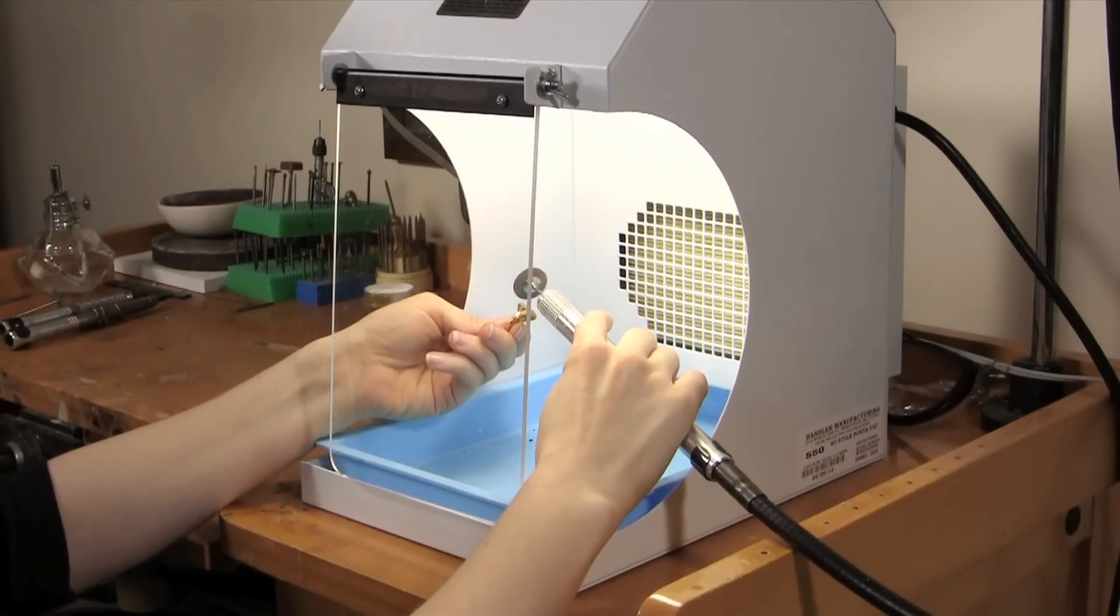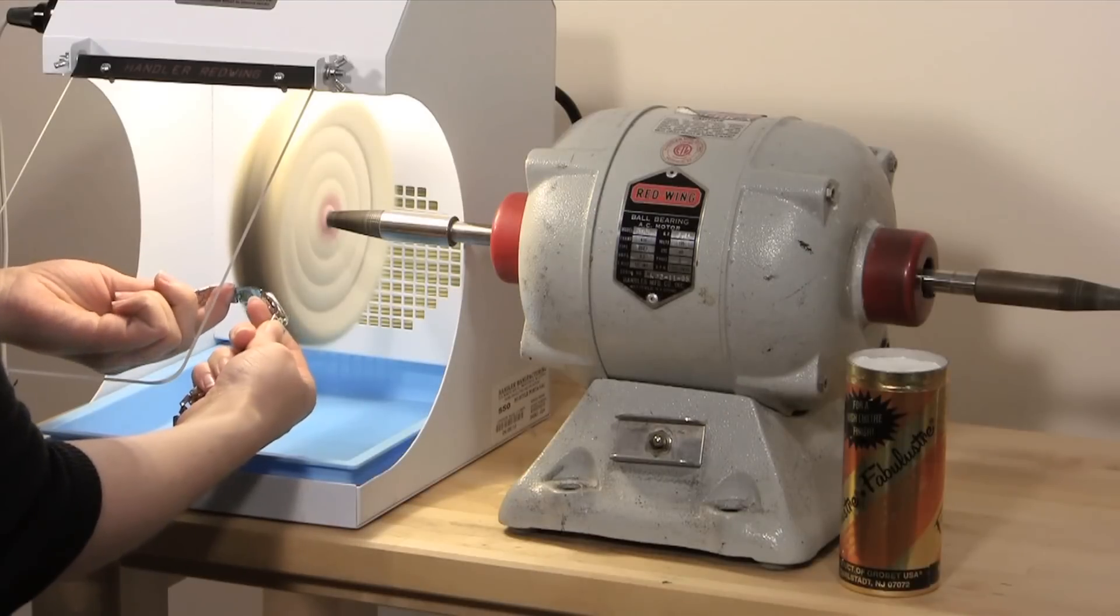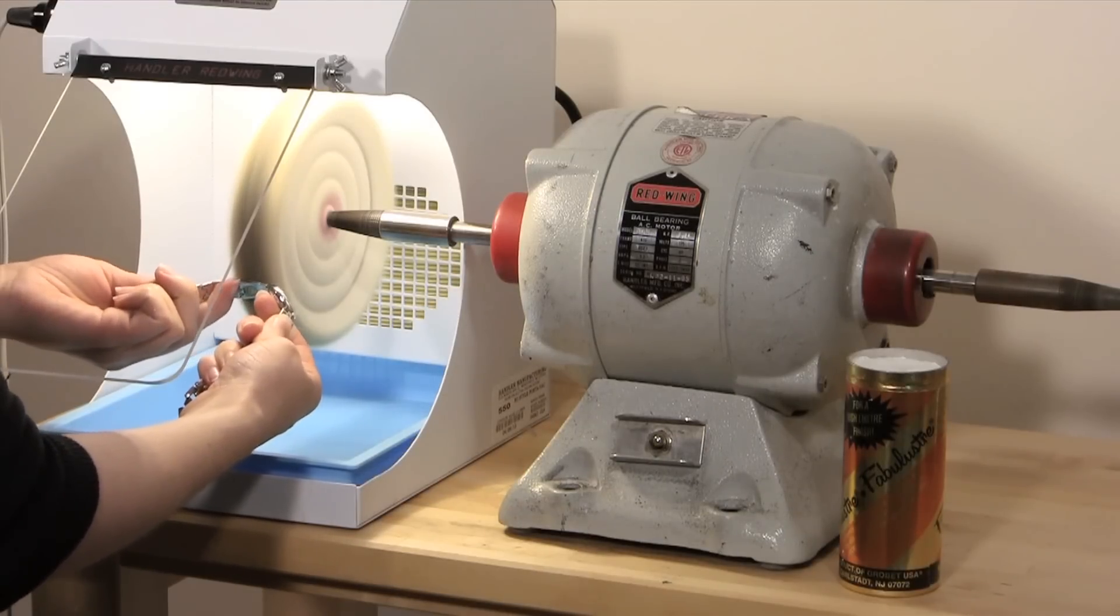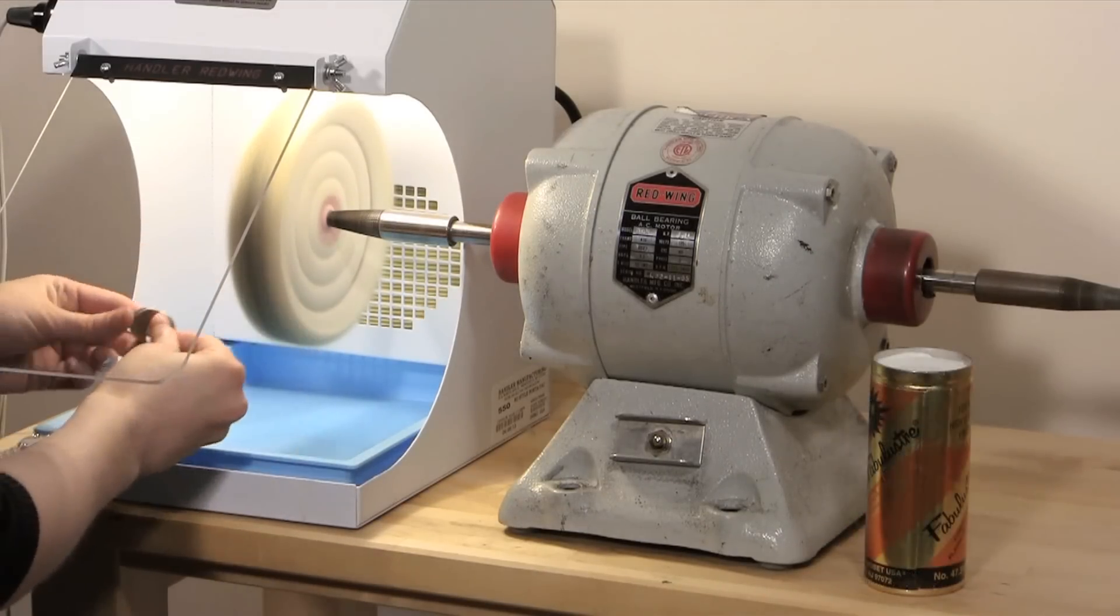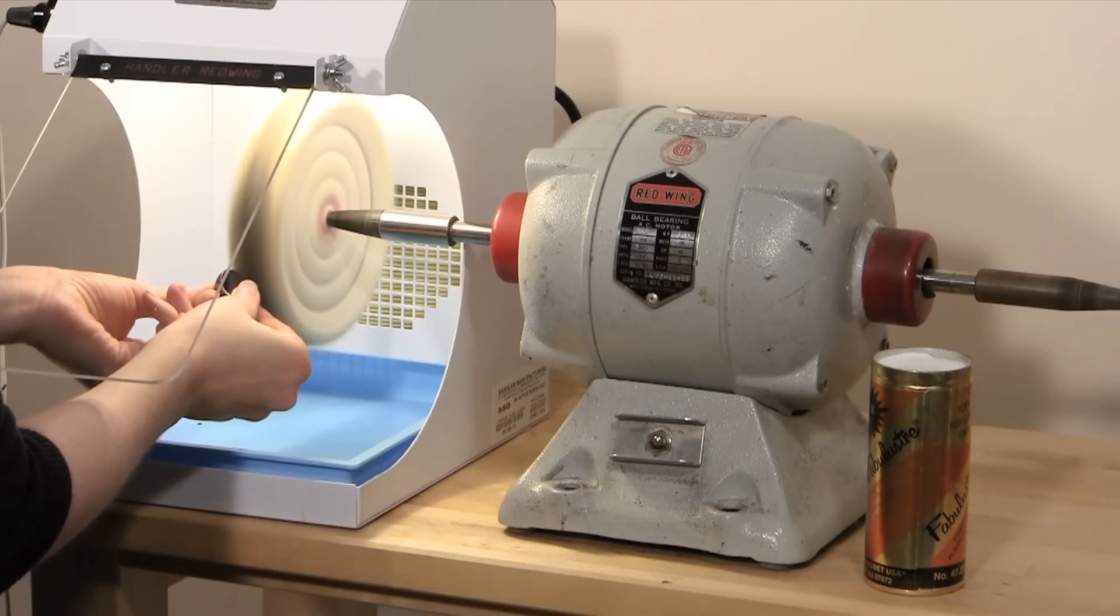Say goodbye to bulky and inefficient dust collectors that take up a whole table by themselves and say hello to the Handler PortaVac 550. This new dust collector has the power and suction of the old high-end ones without the weight and size.